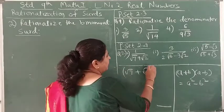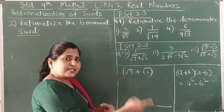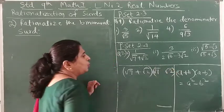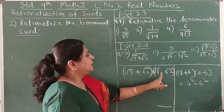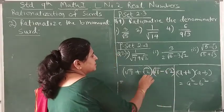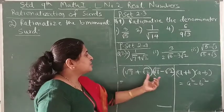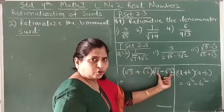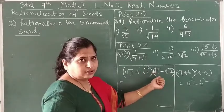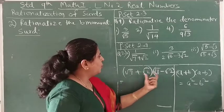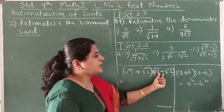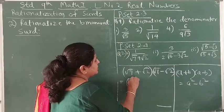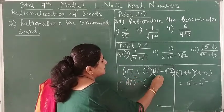So suppose the denominator binomial is square root of 7 plus square root of 2. Its rationalizing factor has the same terms — square root of 7 and square root of 2 — but the sign changes: if you have addition in the denominator, you take subtraction. This is called the conjugate. When you multiply square root of 7 plus square root of 2 by its conjugate square root of 7 minus square root of 2, using the identity, you get (√7)² − (√2)² = 7 − 2 = 5, which is rational.